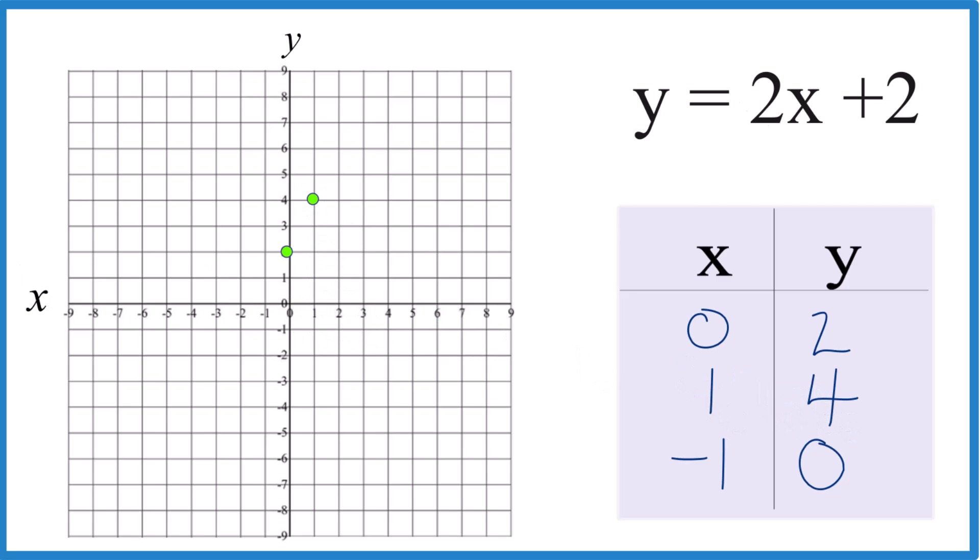You could do it with just 2 points, but it's better to have 3 in case you made a mistake here. So how about x is negative 1 and y is 0, right there.